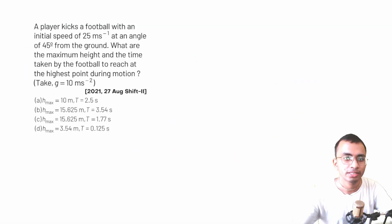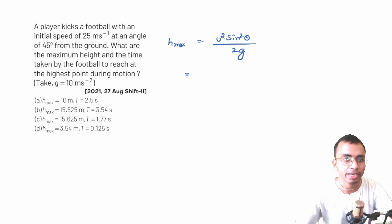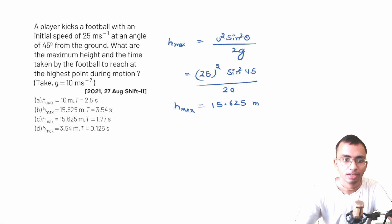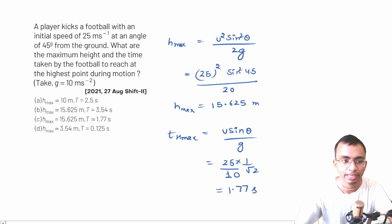Now let's solve a question from JEE Mains 2021: A player kicks a football with an initial speed of 25 m/s at 45 degrees from the ground. Find the maximum height and time to reach the highest point. For h_max = u² sin²theta / 2g: h_max = 25² × sin²45° / 20 = 625 × (1/2) / 20 = 15.625 meters. For t_hmax = u sin theta / g: t_hmax = 25 × (1/√2) / 10 = 1.77 seconds. The answer is option C.